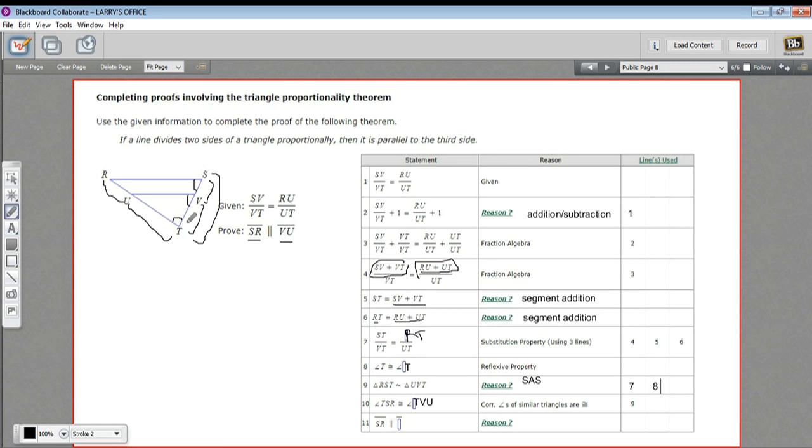Now, what they did here is they created a transversal. So if these two lines are parallel, this side of the triangle is like a transversal that crosses both those lines. So if these two angles then are congruent, they're corresponding angles in this transversal figure, then those two lines have to be parallel. And that's exactly what happens here.